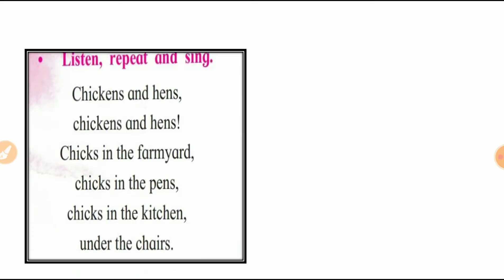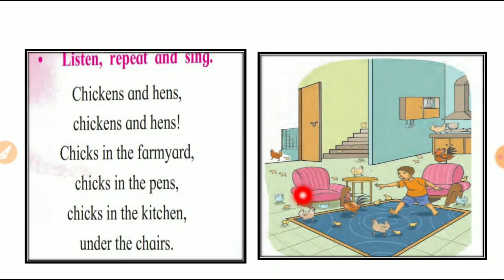Now we learn poem. Listen, repeat and sing. Suno, dhuhrau, or gao. Chickens and hens. Chickens and hens. Chicks in the farm yard. Chicks in the pen. Chicks in the farm yard. Chicks in the pen. Chicks in the kitchen. Under the chair. Chicks in the kitchen. Under the chair.